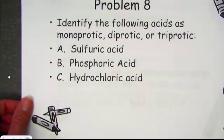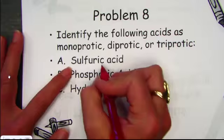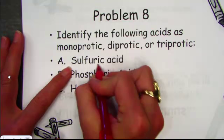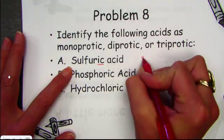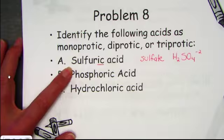Identify these acids as monoprotic, diprotic, or triprotic. That's as easy as writing out the formulas. Here's an acid coming from the -ic suffix — we need to find the polyatomic ion sulfate, which carries a −2 charge. To balance the charge, we need two protons. Sulfuric acid is diprotic.